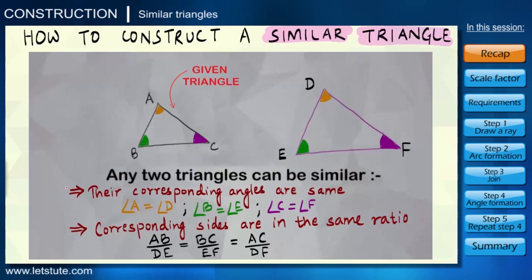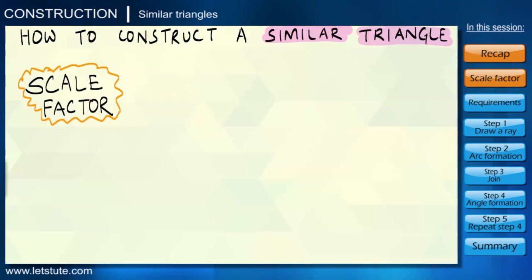But in today's session we are going to do something different. We will learn how to construct a similar triangle when we do not have any information about these criteria, and all we have been given is a triangle with some dimension and we also know something called a scale factor.